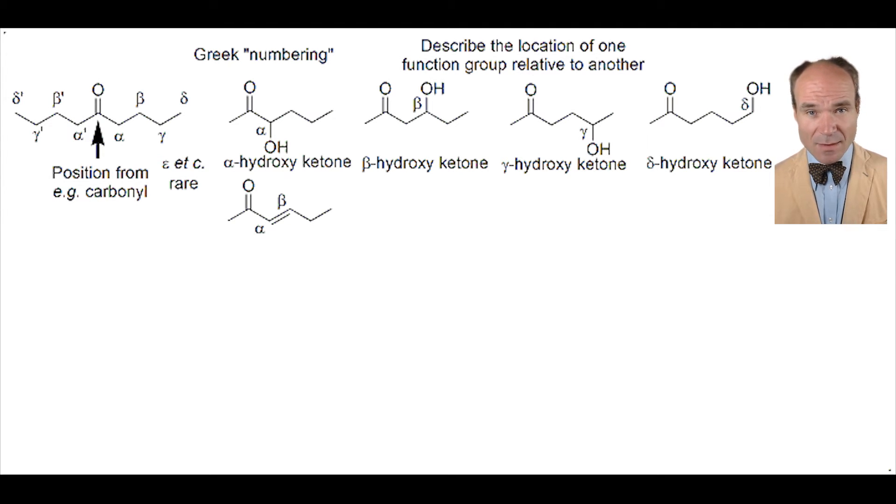The alkene carbons do not have a maximum number of atoms attached, saturated, that we would find with a tetrahedral sp3 carbon. Thus, the alkene is described as unsaturated. So this arrangement is an alpha beta unsaturated ketone.